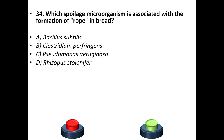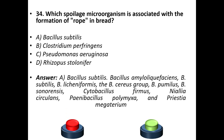Thirty-fourth question: which spoilage microorganism is associated with the formation of ropiness in bread? Ropiness in bread is caused by A: Bacillus subtilis. B: Clostridium perfringens. C: Pseudomonas aeruginosa. D: Rhizopus stolonifer. Answer is A — Bacillus subtilis. Other causative species include Bacillus amyloliquefaciens, Bacillus licheniformis, Bacillus cereus group, Bacillus pumilus, Bacillus sonorensis, Cytobacillus firmus, Neobacillus circulans, Paenibacillus polymyxa, and Priestia megaterium — all can cause ropiness in bread.